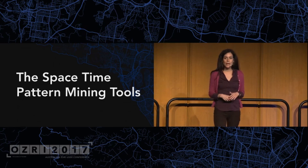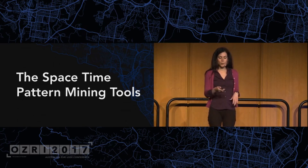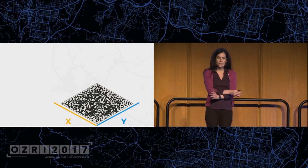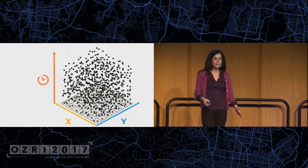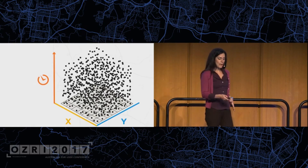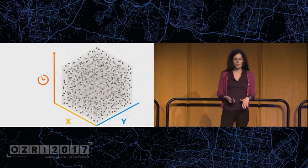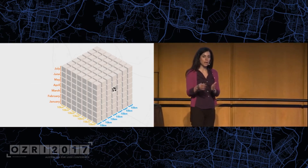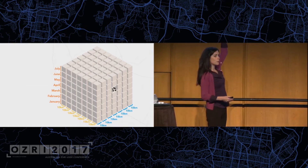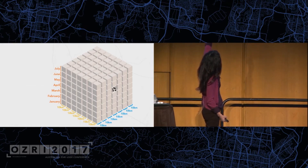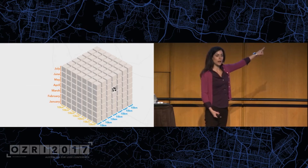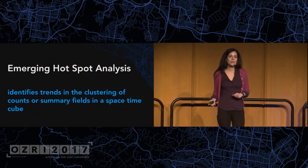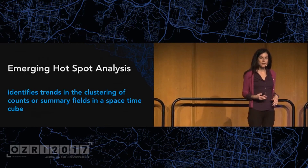We do this by aggregating into what we call a space-time cube. Traditionally with non-temporal data, we just aggregate using a grid on the ground with an x and y. But with temporal data, you can imagine it like this: time is the third dimension. In this example, the grid on the ground is 10 kilometers by 10 kilometers, and then one-month increments going up. That little peek shows what happened in just the month of May in that one location on the ground.